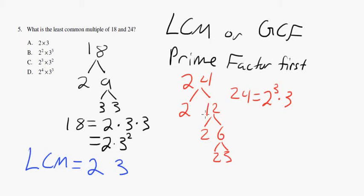So the lowest common multiple is the highest power of 2, which is found here, 2 to the 3, times the highest power of 3, which is found here, times 3 squared.